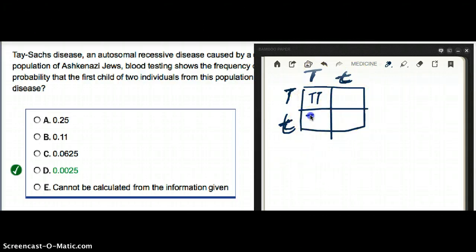This one is going to be big T, little t - this is a carrier. This is also big T, little t - also a carrier. And this is little t, little t - this is the one which is going to have the disease.